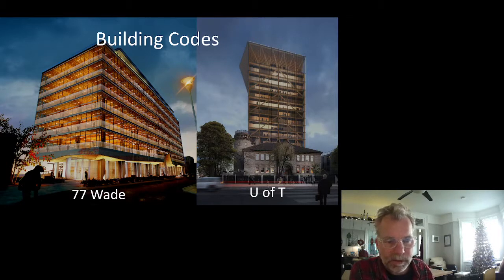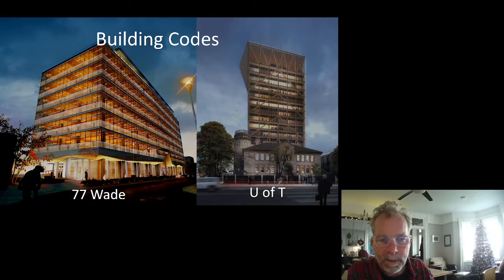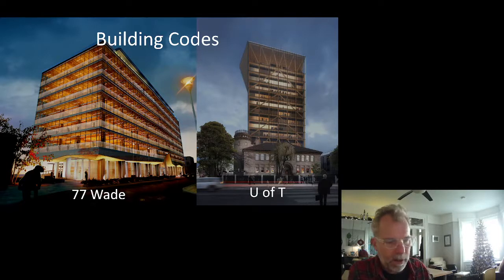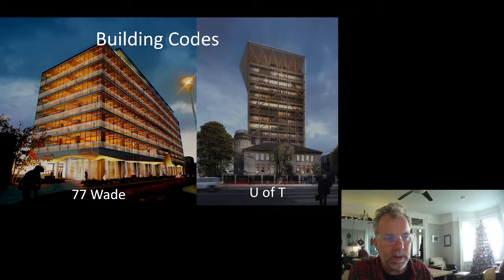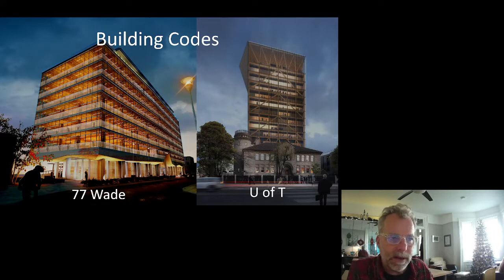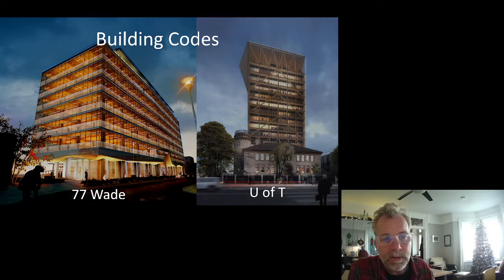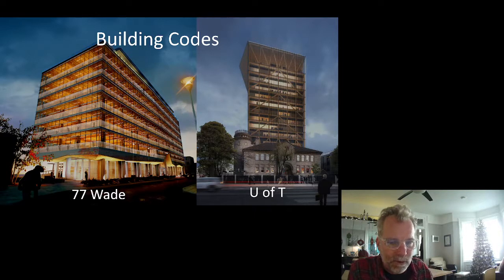Some of the things they do: you have a high fire rating — in a concrete building they might require one or one-and-a-half hour; at 77 Wade we have a two-hour fire rating between floors. You build your cores non-combustible — your vertical circulation elements are non-combustible. You pressurize your cores so you can't draw smoke into the core. You have an alternative water source for sprinklers to improve reliability. There are a whole lot of things we can do to demonstrate comparable performance.